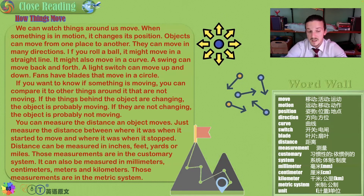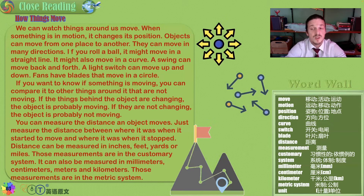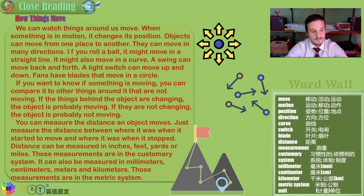Distance can be measured in millimeters, centimeters, inches, feet, yards, kilometers, miles, and more. Millimeters, centimeters, meters, and kilometers are used in Canada — these are called the metric system. Distance can also be measured in inches, feet, yards, or miles, which is called the customary system of measurements, used by the United States.